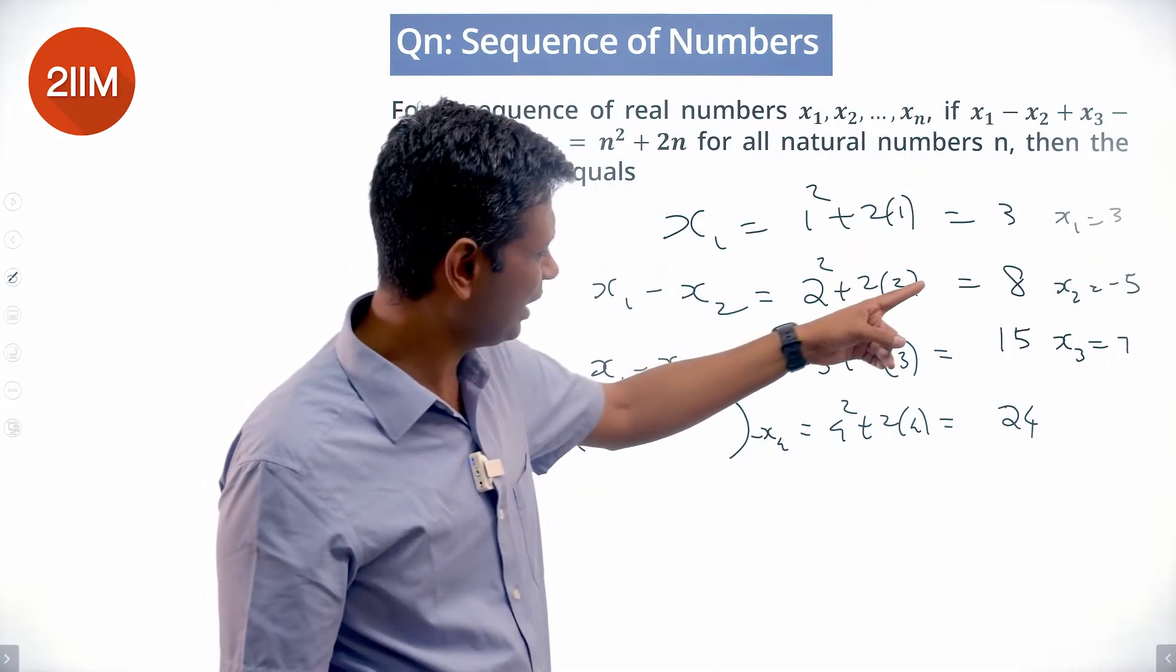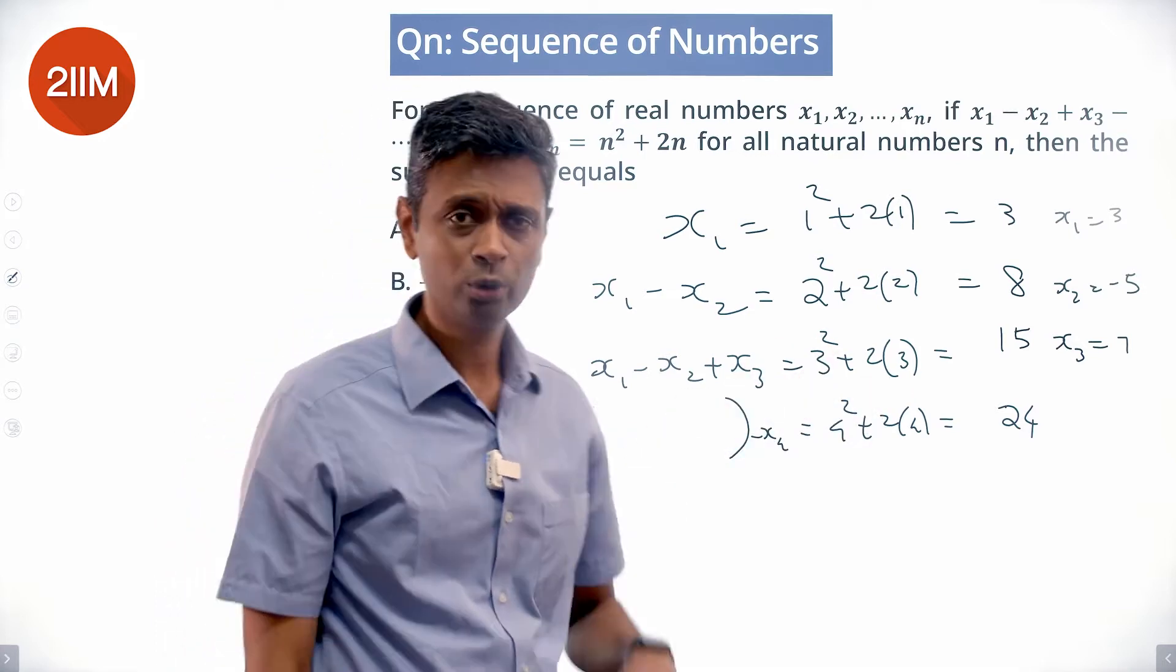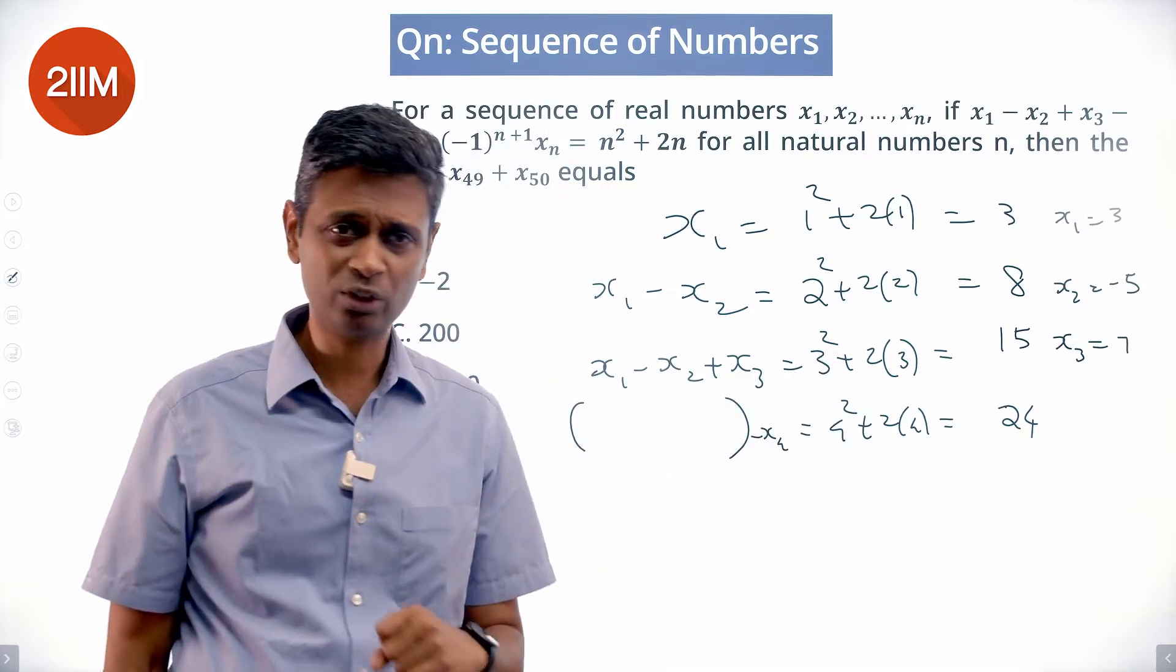From 15 we subtract x4 to get 24, so 15 minus x4 equals 24, meaning x4 is minus 9.